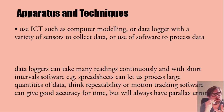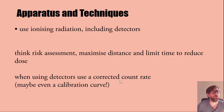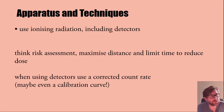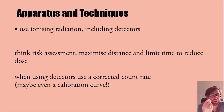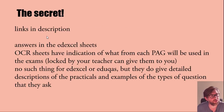For ionizing radiation, always think about the risk assessment. Maximize your distance from the source and minimize the time to reduce the dose of radiation you receive. An accurate technique that will appear in the guides is that you have to use a corrected count rate. They could even ask you about a calibration curve with a Geiger-Müller tube. That covers all the apparatus and techniques.